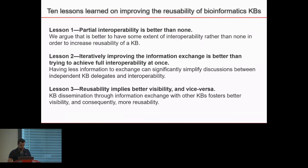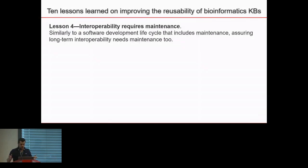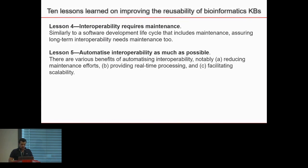The fourth lesson is that interoperability requires maintenance. Most interoperability solutions involve software components, and like the software lifecycle, they require ongoing maintenance to develop and improve. The fifth lesson is to automatize interoperability as much as possible. Doing so can significantly reduce maintenance efforts, keep data up to date, provide real-time processing with the latest information, and — depending on the degree of automation — also facilitate scalability, making it easier to integrate additional knowledge bases.